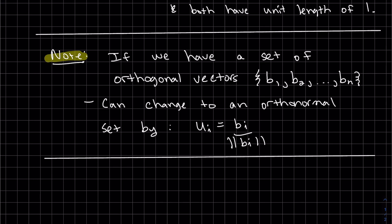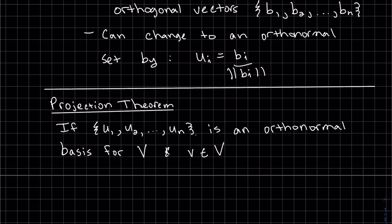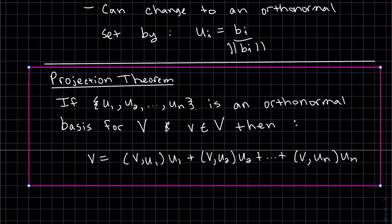Now I'd like to start off with the projection theorem. If {u1, u2, ..., un} is an orthonormal basis for V, and V is in the inner product space V, then v can be written as v = (v·u1)u1 + (v·u2)u2 + ... + (v·un)un. This is actually just a linear combination. The inner product is a constant, so that's my c1, this is my c2, and so forth.